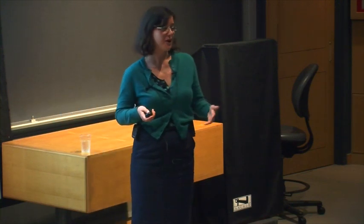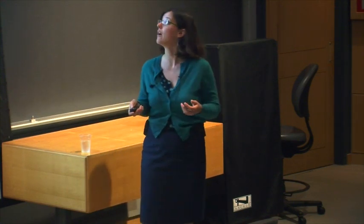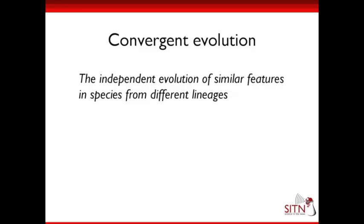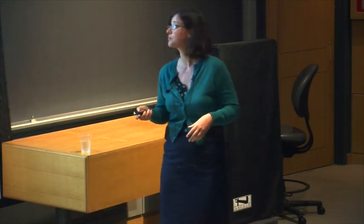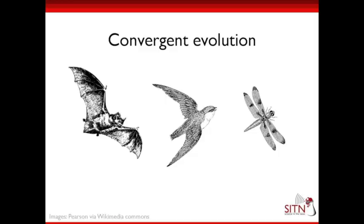Darwin was really influential in our understanding of evolution and natural selection. He also came up with a concept we now call convergent evolution, defined as the independent evolution of similar features in species from different lineages. Basically it means things start in different places but then converge on a similar feature from different starting points. The classic example is wings in bats, birds, and insects — wings and the ability to fly actually evolved separately three separate times.